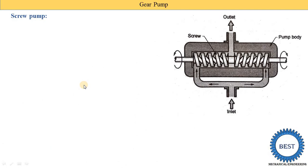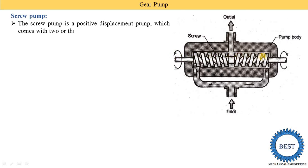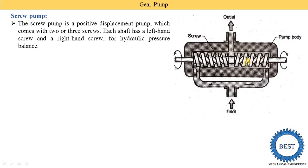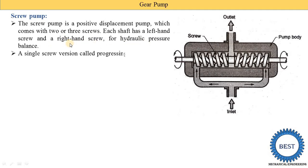The last type is the screw pump. It is called a screw pump because screws are used to increase the pressure of the liquid. All gear pumps are positive displacement pumps. The screw pump comes with two or three screws. Each shaft has a left-handed screw and the other has a right-handed screw. For hydraulic pressure balance, a single screw version is called a progressing cavity pump.